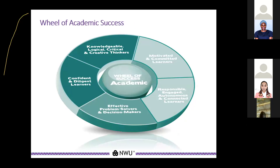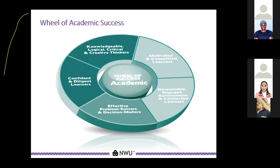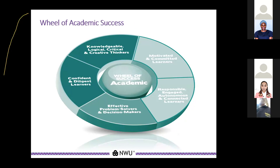The wheel of academic success includes being a motivated and committed learner, which requires an individual to be driven to perform academically and to have dedication. Being a responsible, engaged, autonomous, and connected learner refers to students planning through their work, being punctual, and ensuring that they are up to date with their course content. Being an effective problem solver and decision maker means making informed decisions and being proactive in taking accountability for your studies.